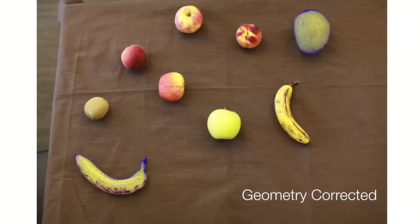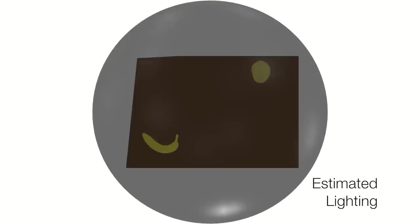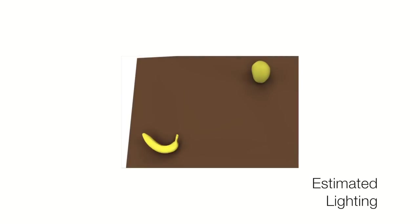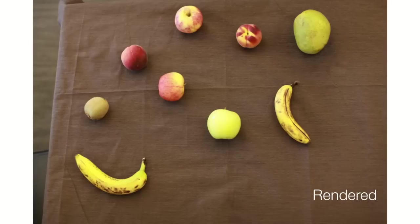We estimate an illumination model from the visible pixels and the geometry of the object using a von Mises Fischer basis with smoothness and sparsity priors. We can now produce shadows and illumination changes on the object as it moves.